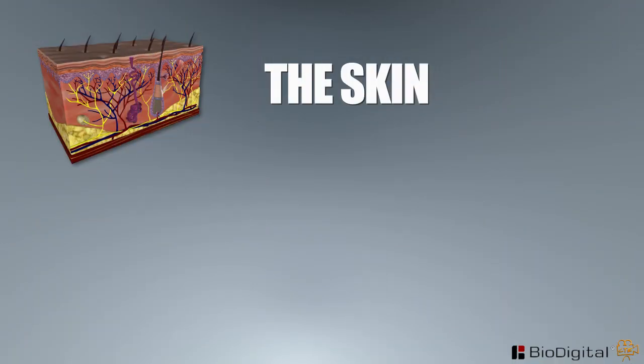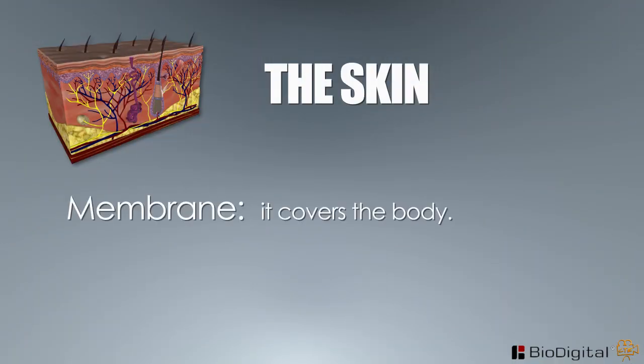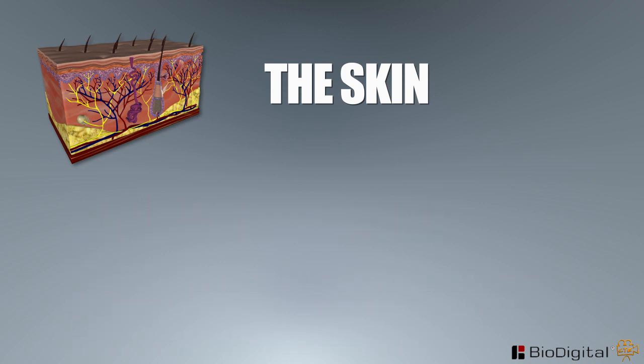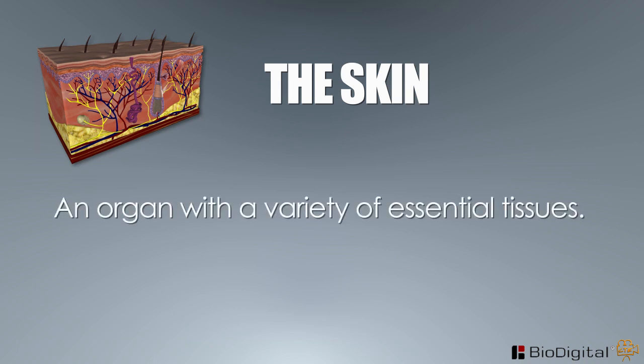This system is known as a membrane because it covers the body, and an organ because it contains several tissues. For the purposes of this course, the system will be described as an organ with a variety of essential tissues.